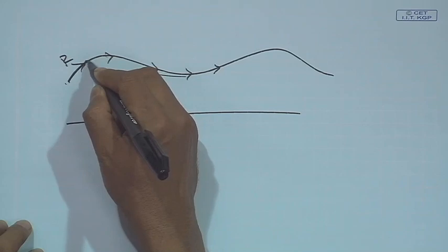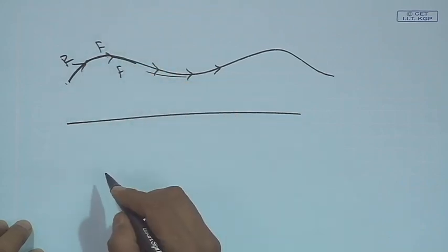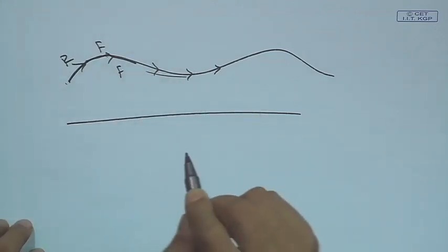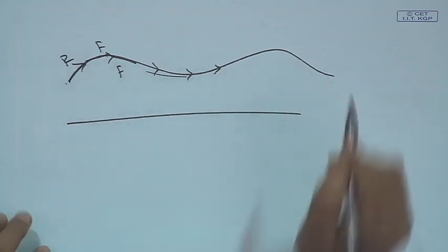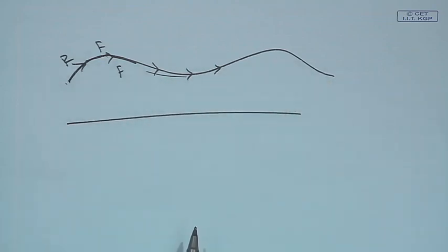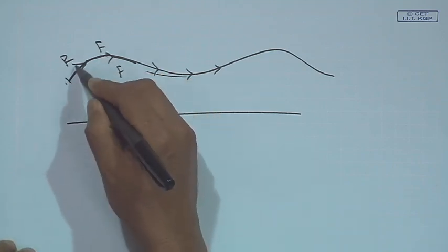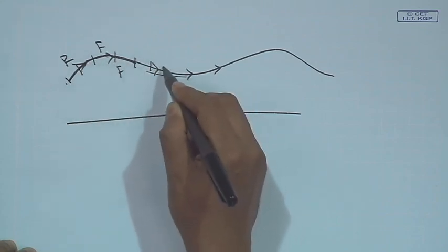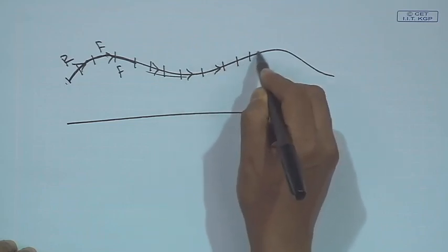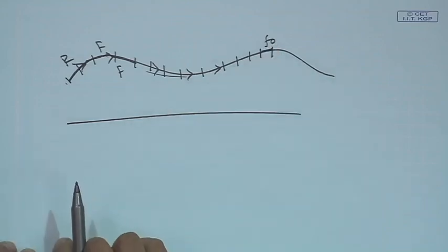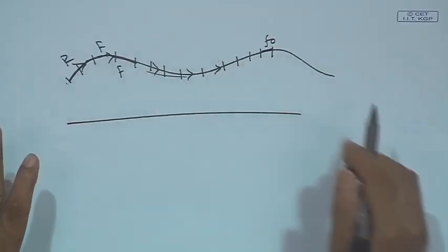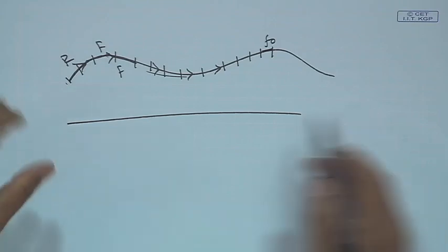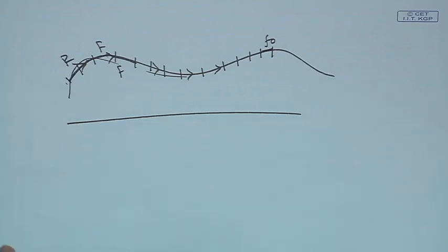So I can say it is rising, then flat, then falling F0. Rising, flat, falling, short rising, slow rising, slow falling, short falling — all kinds of labels I can assign, and I can model that F0 thing — that is called the ToBI model. Similarly I can do some stylization, meaning I can linearly approximate this F0 contour. So I can say the whole F0 contour is nothing but a sum of some linear line segments — this is called piecewise linear approximation. Or I can generate a mathematical model by which changing the parameters I can generate this contour, which is called the Fujisaki command response model, which we will discuss in detail.